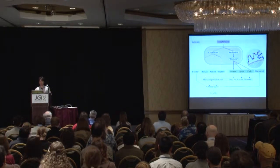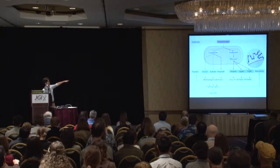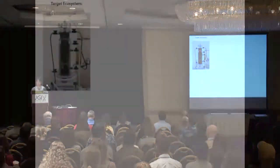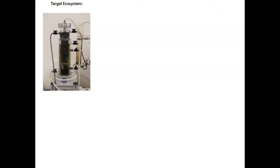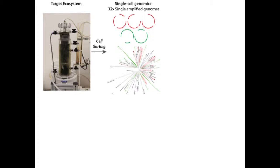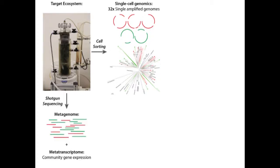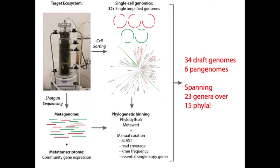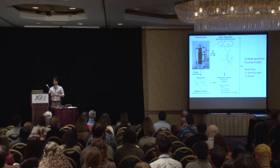Our hypothesis is that these uncultivated organisms are involved in converting the intermediate compounds down to substrates that methanogens can further convert to methane. To go over the workflow: the target ecosystem is this TA reactor. We sequenced 32 single amplified genomes and complemented that with parallel shotgun sequencing of a metagenome and metatranscriptome. Processing them together through phylogenetic binning, we generated 34 draft genomes and six pangenomes spanning 23 genera and 15 phyla. Based on our calculations, we've covered about 90% of the bacterial community — which is unheard of for a wastewater treatment process.